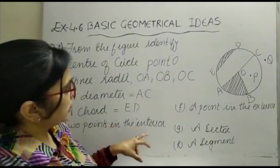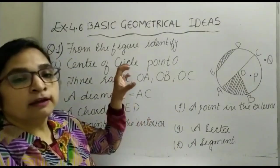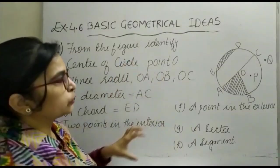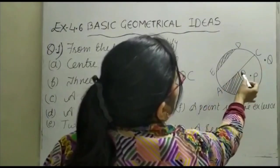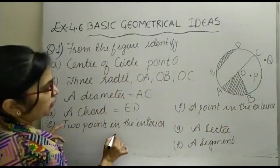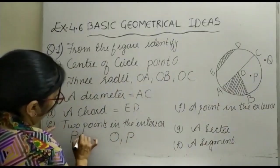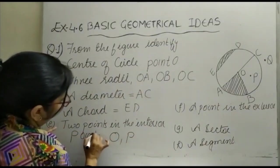Then, two points in the interior. Interior means the points are inside the circle. If we check this circle here, the two points in the interior are point O and point P.